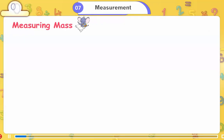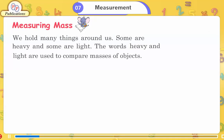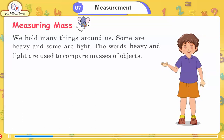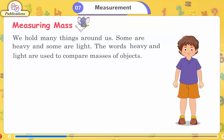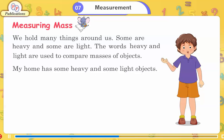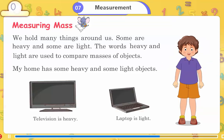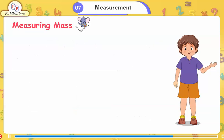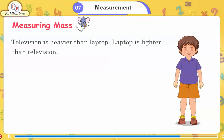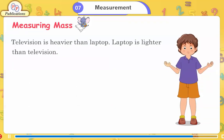Measuring Mass. We hold many things around us. Some are heavy and some are light. The words heavy and light are used to compare masses of objects. My home has some heavy and some light objects. Television is heavy; laptop is light. Television is heavier than laptop, and laptop is lighter than television.